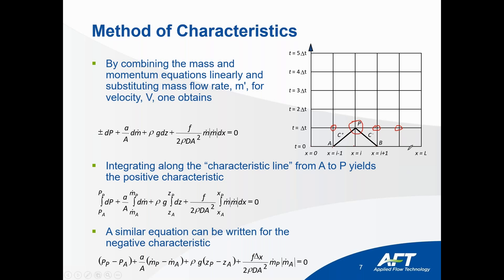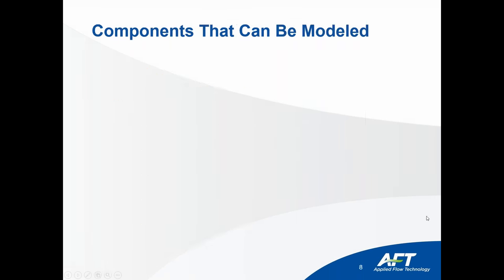When you have a pipe with a given pipe length, the more pipe sections you have, the longer your run time is going to be because you'll have more calculations. When working with Impulse, you want to simplify your model and try to eliminate as many short sections of pipe as you can — that way you can sacrifice long run times but still have really good results.